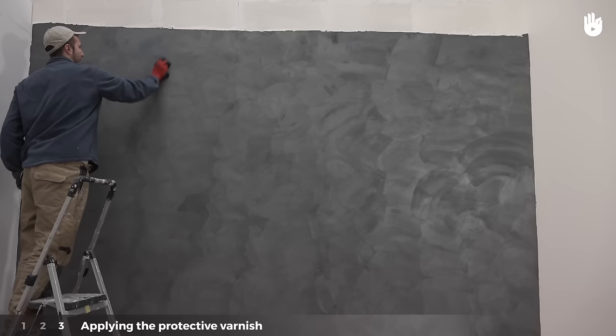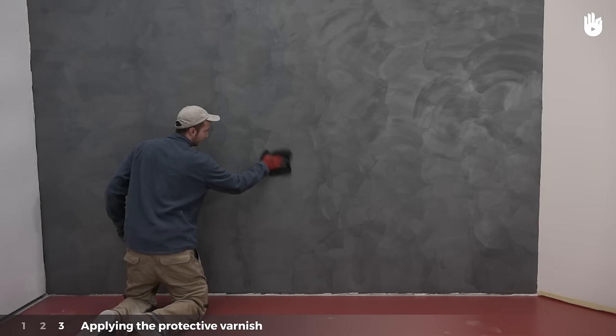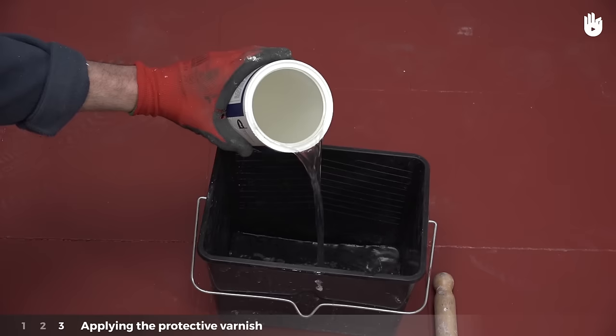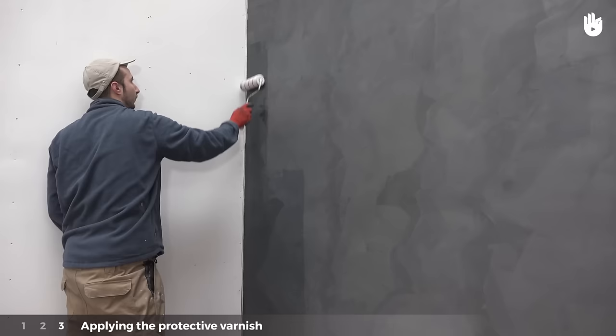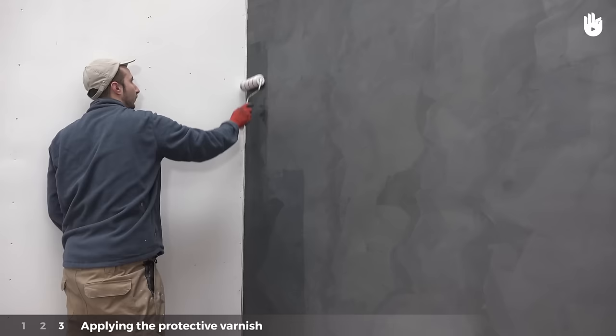Once the second layer of plaster coating has been applied, buff the surface with a cloth. The varnish needs to be spread with a short head roller which is ideal for smooth surfaces. Spread it from bottom to top in vertical strips until your entire wall is varnished.